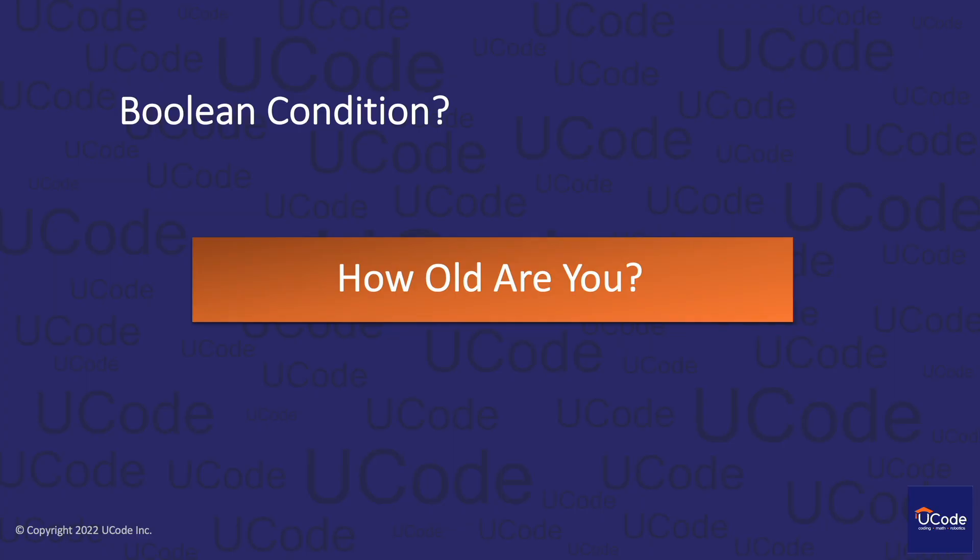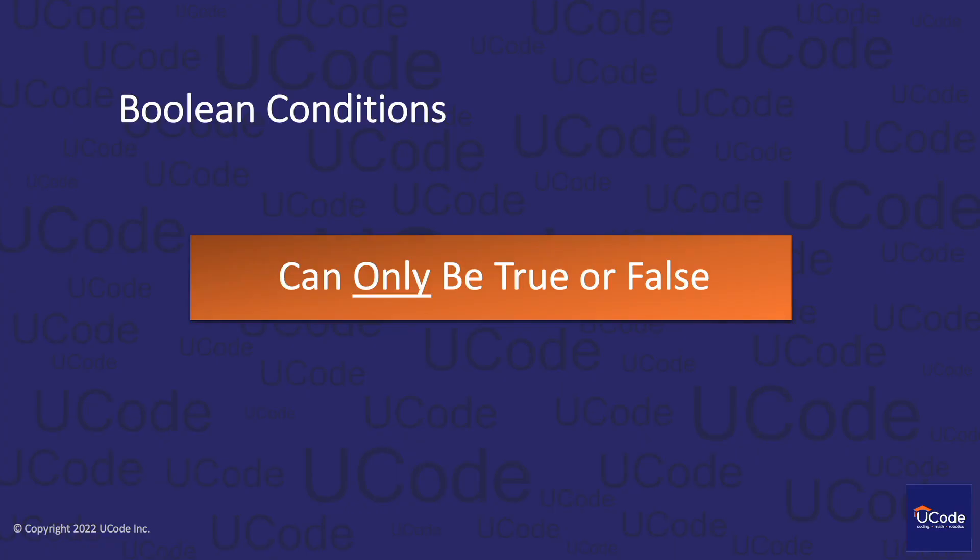A statement like 'how old are you' is not a Boolean condition, because the answer isn't either true or false — the answer is a number. To review, Boolean conditions are conditions that can only be true or false.